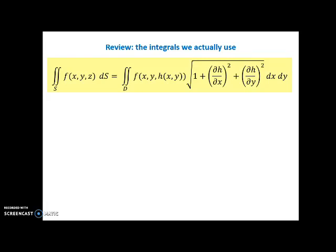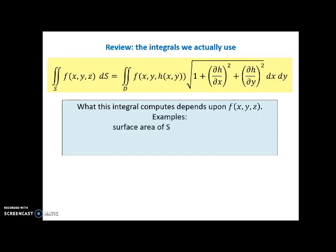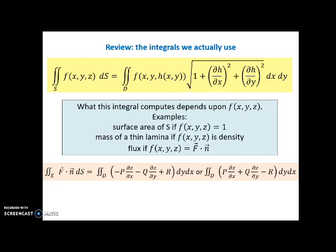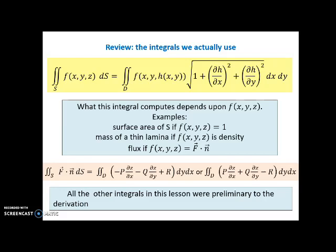Summary: here's the surface integral formula where we integrate some function over a surface. What this integral computes depends on f(x,y,z): if f = 1, we get the surface area; if f is density, we get the mass of a thin lamina; and if f is the vector field F dotted with the unit normal vector n, we get flux. There's an easy way to compute flux — our formula for upward-pointing n and the sign-reversed version for downward-pointing n. All the other integrals in this lesson were preliminary to the derivation of these two computational forms and are rarely needed directly.